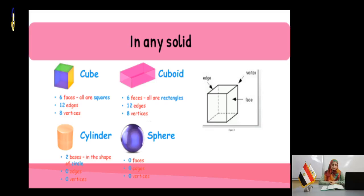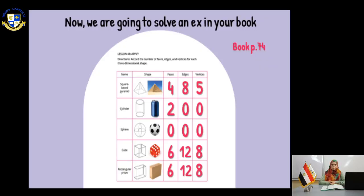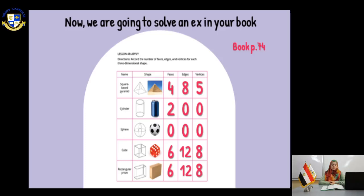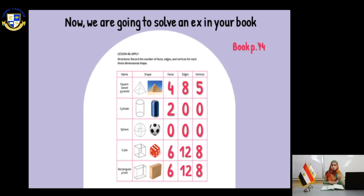In the next page, from your book page 74, you can see a table with the name, the shape, number of faces, number of edges, and number of vertices. Let's start with the first shape: the square-based pyramid. It is called square-based pyramid because the base of this shape is a square. It has four faces, eight edges, and five vertices.